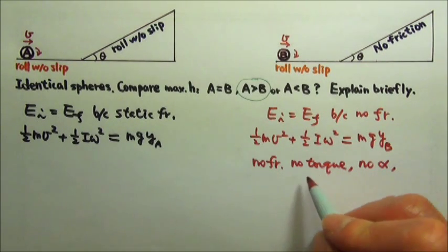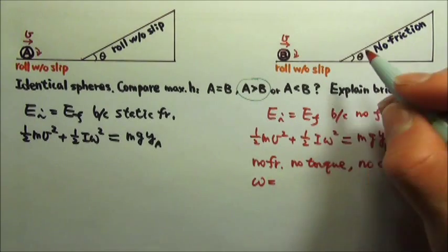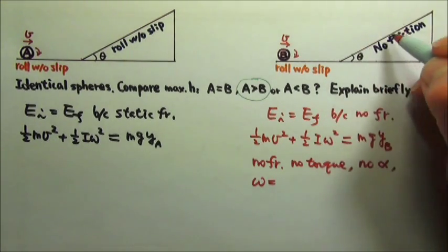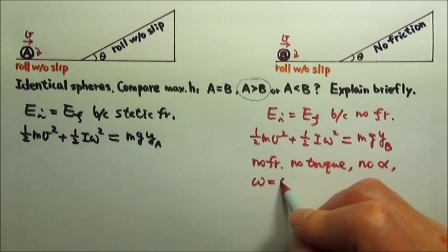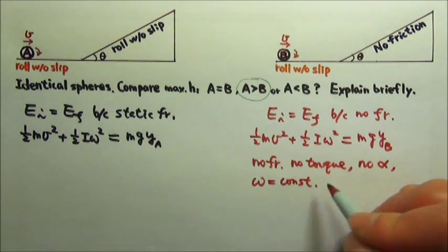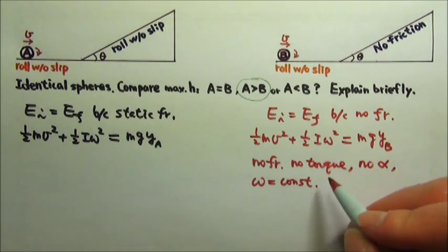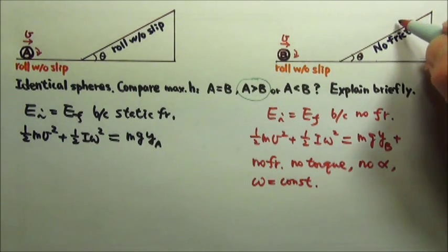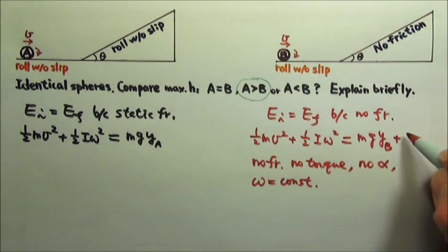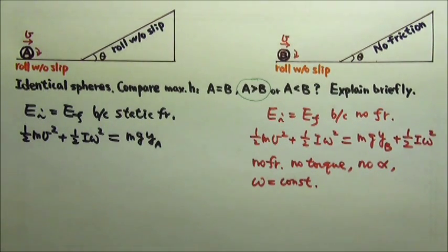Therefore, there is no torque to change omega. So the sphere has to keep rolling at the same omega all the way up because omega has to be a constant. No torque to change the omega. Therefore, at the maximum height, the sphere will still be rotating at the same old omega. So we still have one-half I omega squared there.